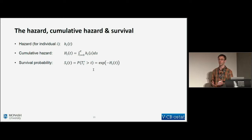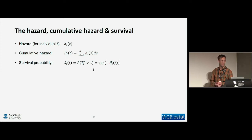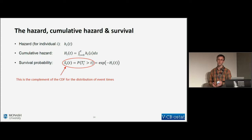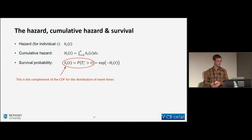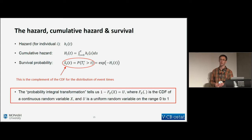There are other quantities of interest in survival analysis. The cumulative hazard is the integral from time zero up to the current time, summing all the little bits of hazard up to that point. The survival probability is the probability that the individual's true event time T_i* is greater than the current time t. There is a one-to-one relationship between the survival probability and the cumulative hazard. Importantly, the survival probability is the complement of the CDF for the distribution of event times.